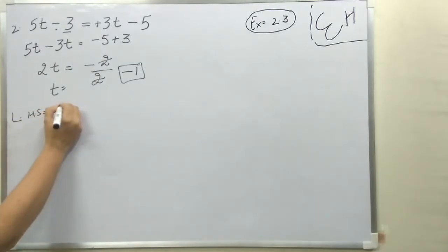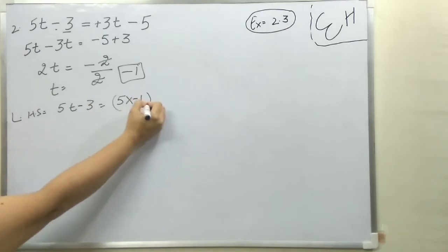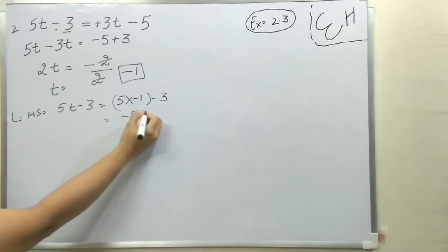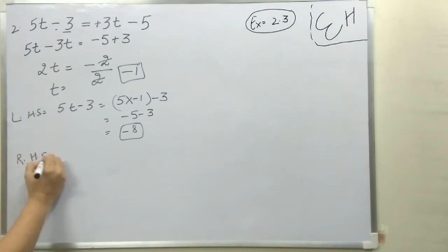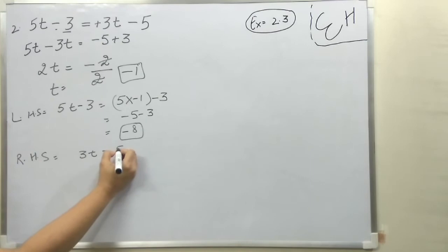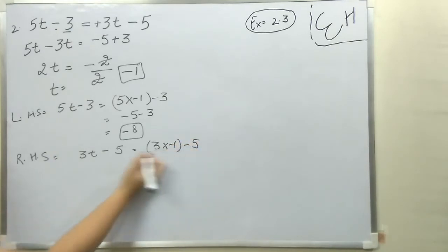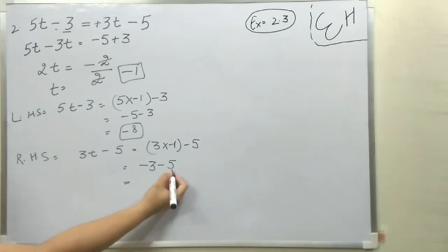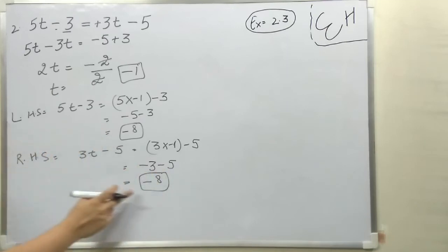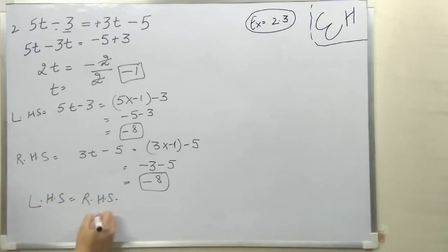Now we will put the values. LHS is 5t minus 3, that is 5 into minus 1 minus 3, which is minus 5 minus 3, giving minus 8. LHS comes out to be minus 8. Now RHS is 3t minus 5, that is 3 into minus 1 minus 5, which is minus 3 minus 5. Both signs are minus, so we add: minus 8. LHS is equal to RHS. Answer is checked.